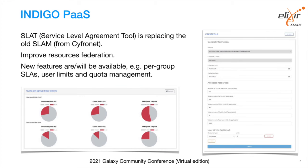At the PaaS level we have a new service level agreement tool. An SLA is a commitment between a cloud provider — in our case GARR or RECAS-BARI — and a client, which in this case is Elixir Italy. We need this to improve resource federation because we have many data centers in Italy and want to use all these resources.